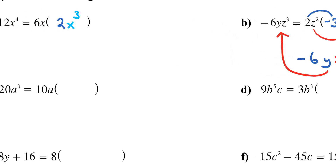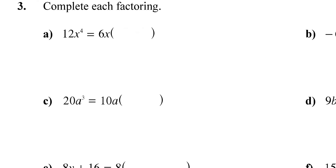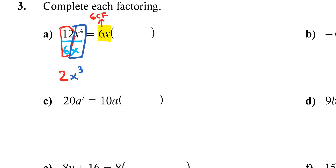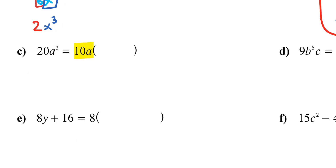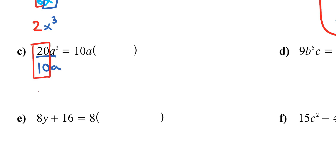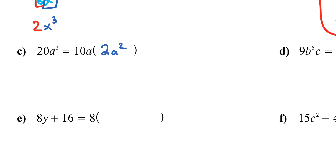A faster approach: 6x is really your GCF, so just divide 12x⁴ by 6x. 12 ÷ 6 = 2, and x⁴ ÷ x = x³, giving 2x³. Applying this to the next question with GCF 10a: 20 ÷ 10 = 2, and a³ ÷ a = a². So the answer is 2a². Check: 10 times 2 is 20, and a times a² is a³, which matches.